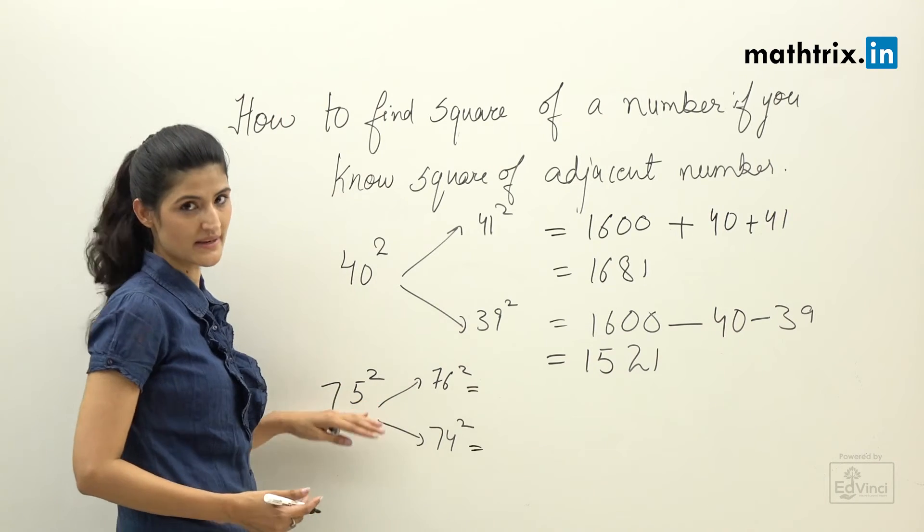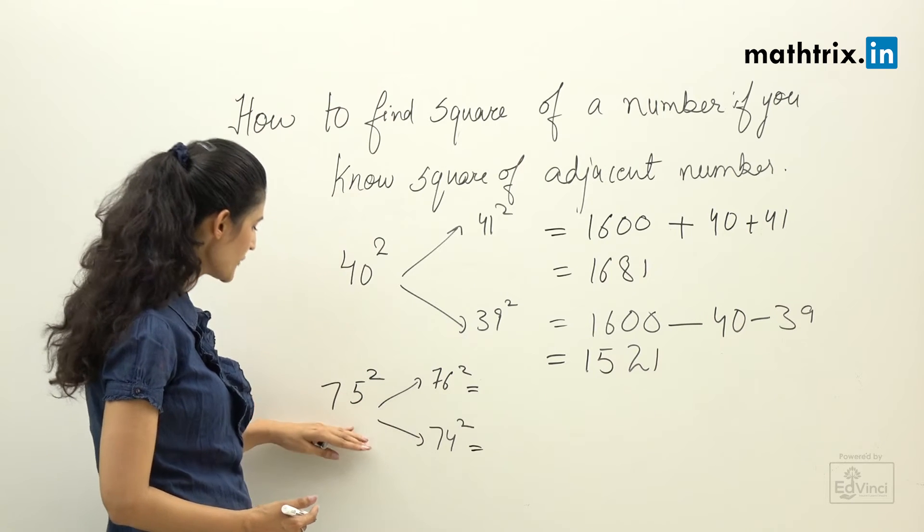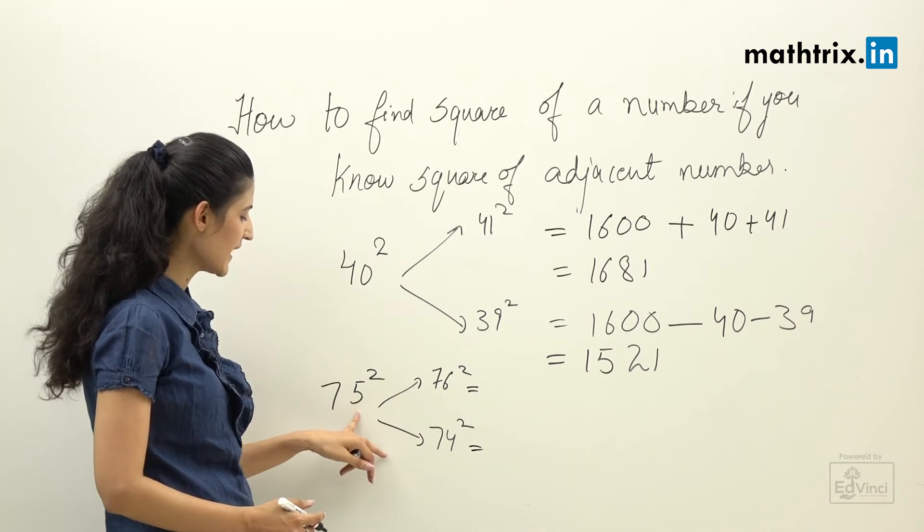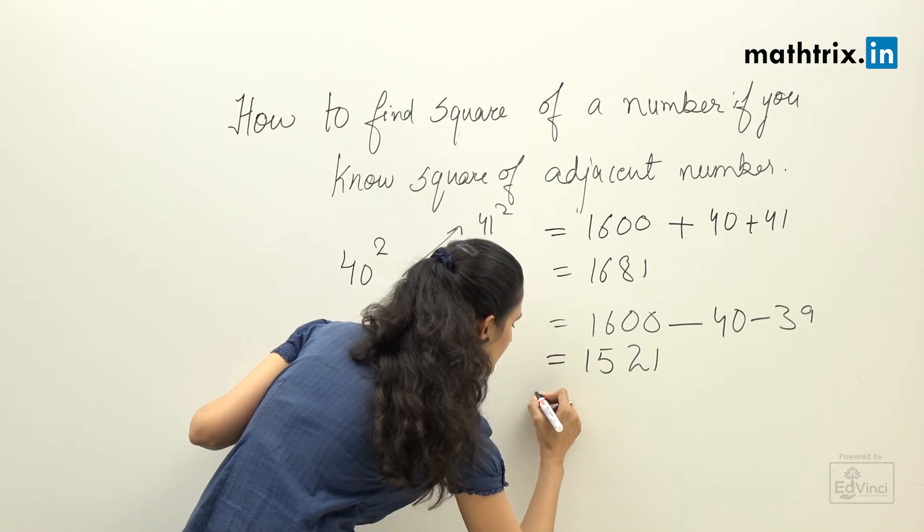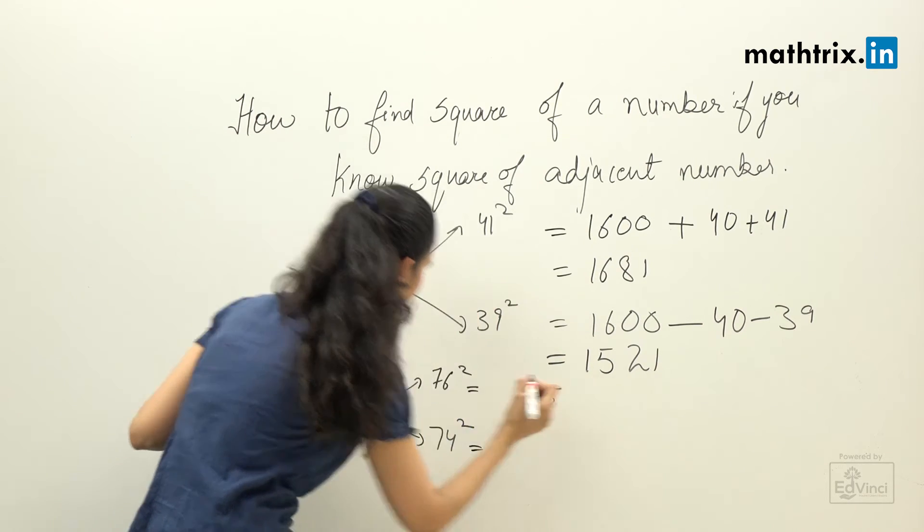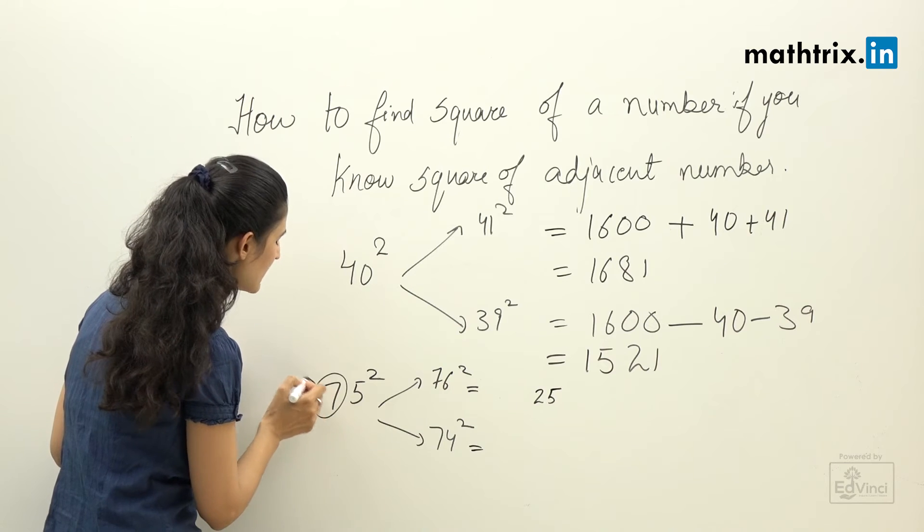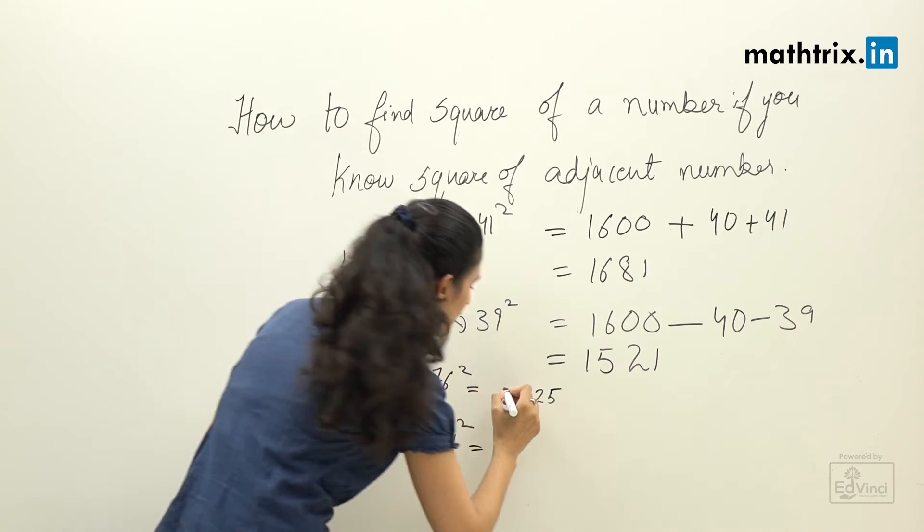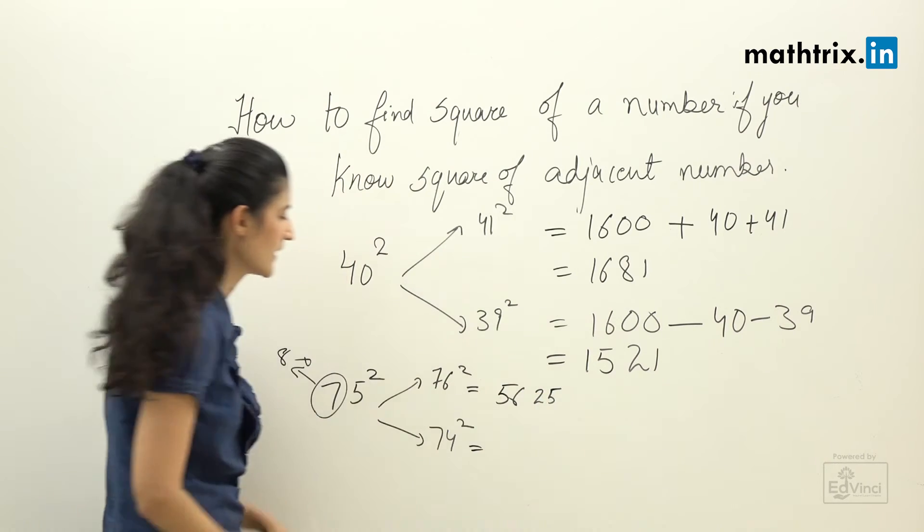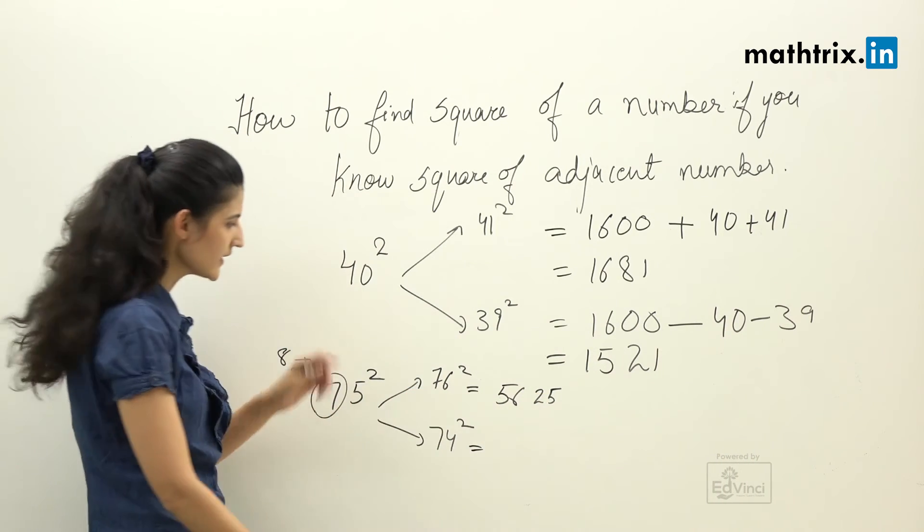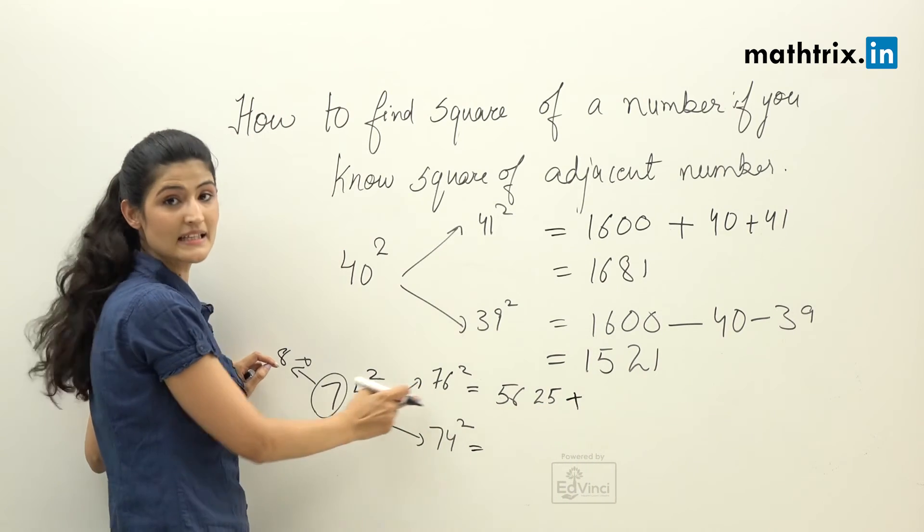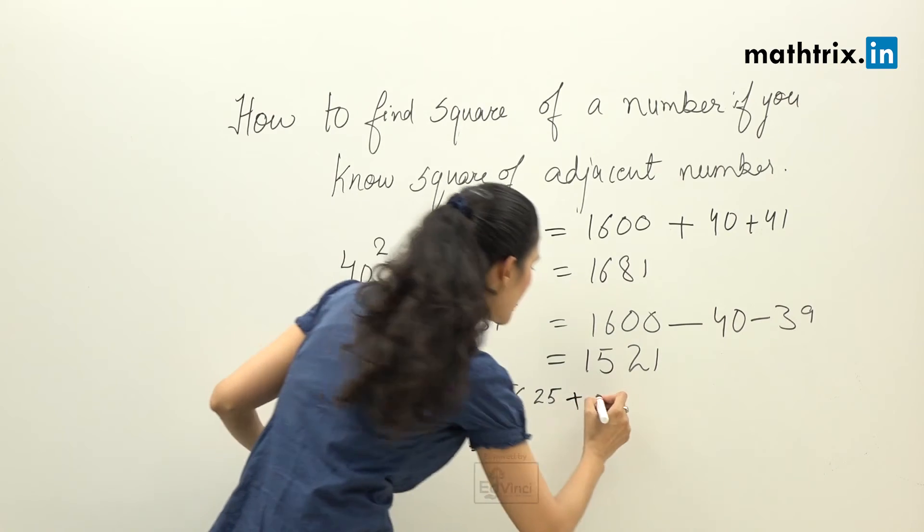Now I'll tell you how did I calculate. We know 75 square. As I already explained it to you, whenever we get a number whose ending with 5, the square is 25 and the number multiplied by the next integer, which is 8, so 56. So 5625 is 75 square. Now since 76 square is greater than 75, so we have to add.